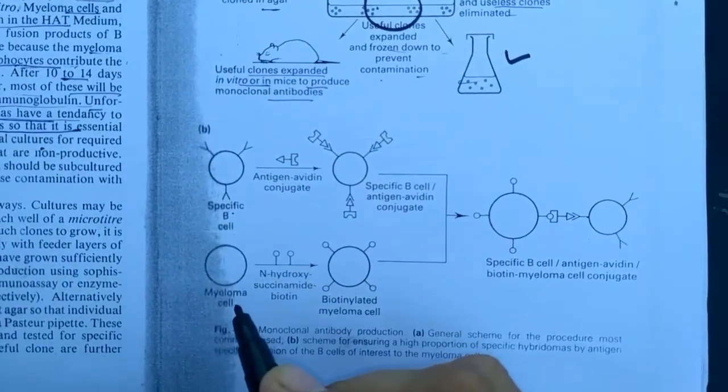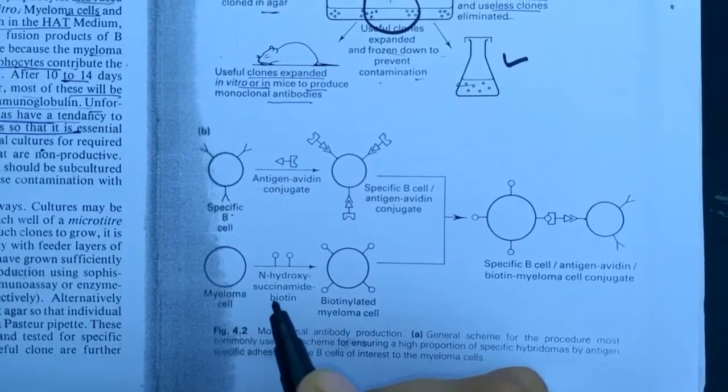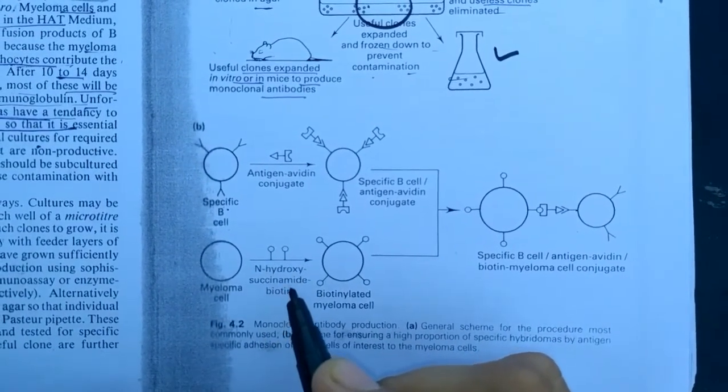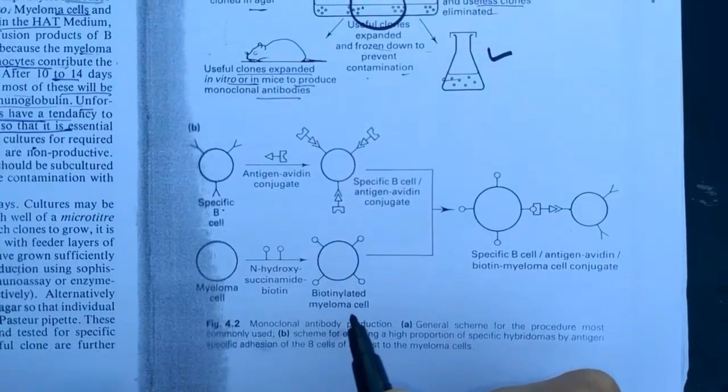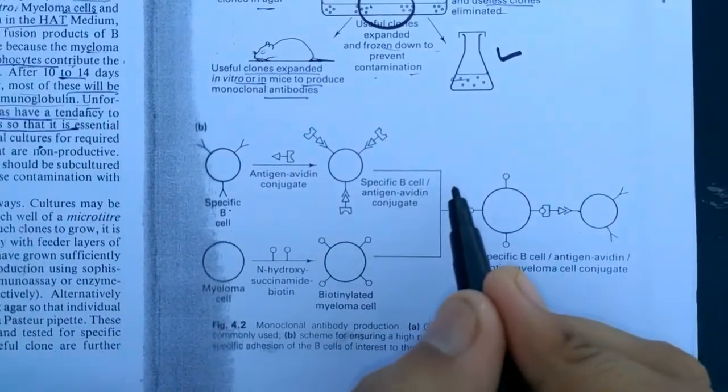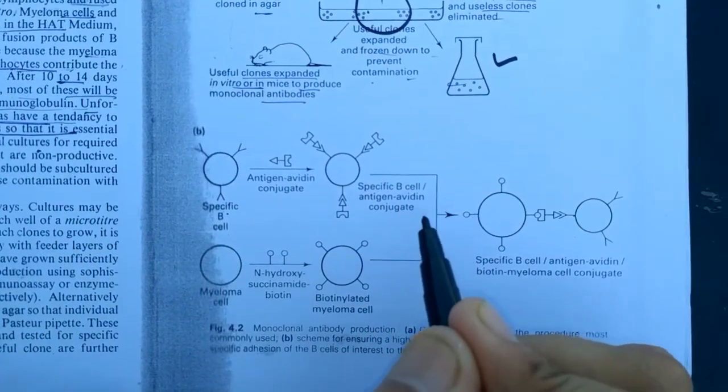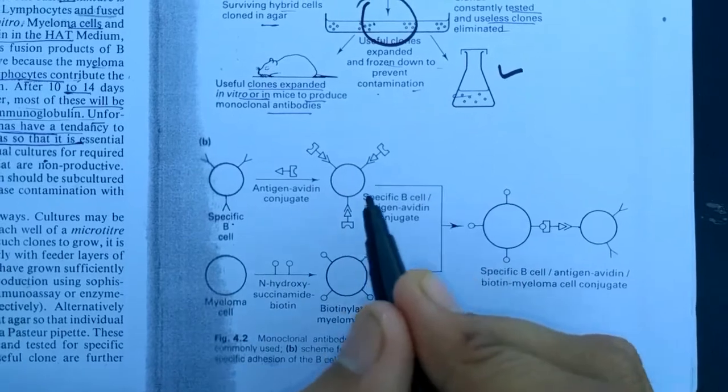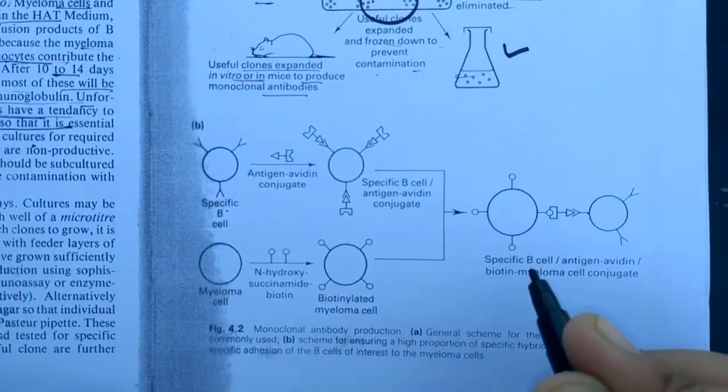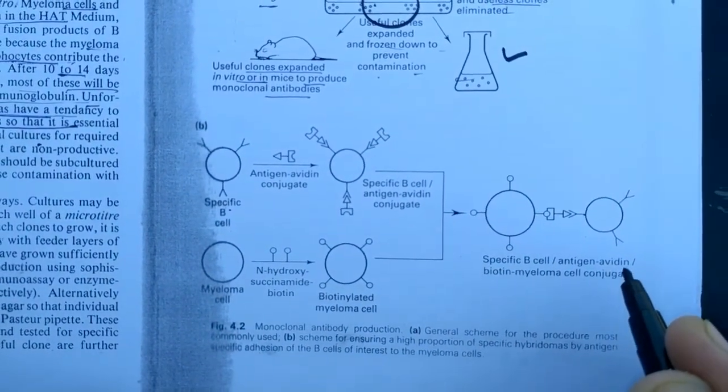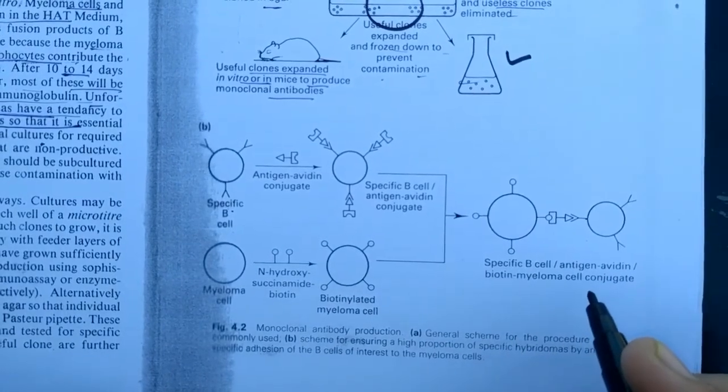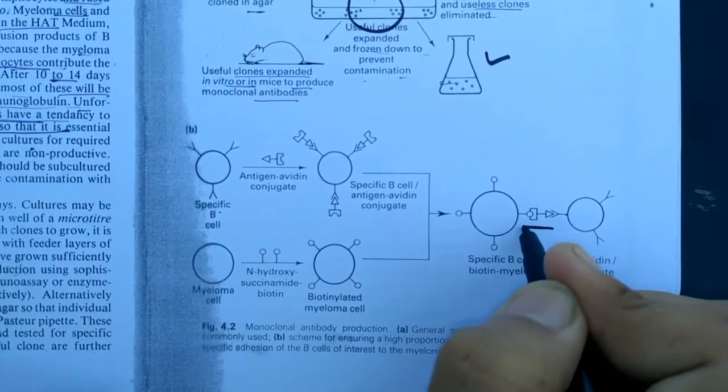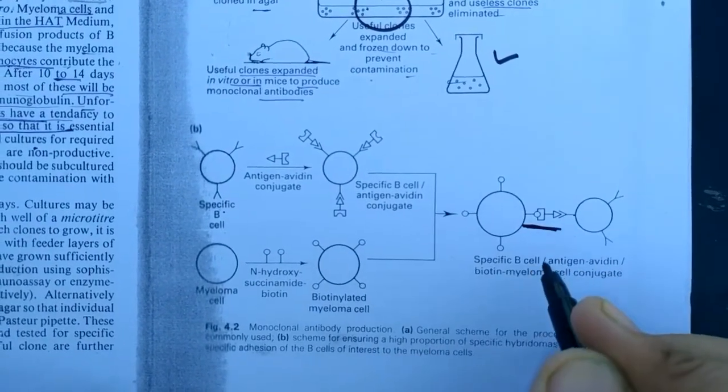Specific B cell and these are myeloma cells. N-hydroxysuccinimide biotin. Biotinated myeloma. Specific B cell. Antigen-avidin conjugate. And this is the conjugate. And this conjugate is carrying one type of antibody. Specific B cell, antigen-avidin-biotin myeloma cell conjugate. Here is the actual production of the hybridoma cell.